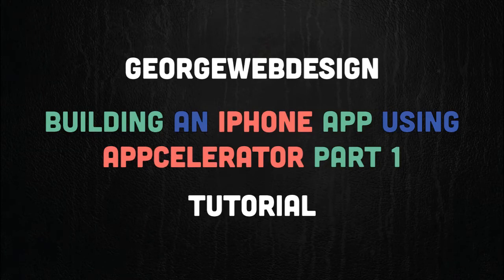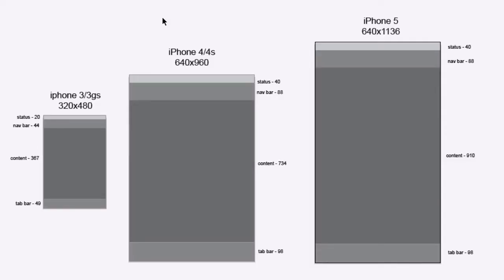This is going to be the first part of the building an app series. What I'm going to go through is the design, things to consider, and also provisional and distribution profiles. We'll come to the profiles at the end, but here, as you can see, I'm using Illustrator. You can use Photoshop, Fireworks, whatever you want — I just find Illustrator easier.